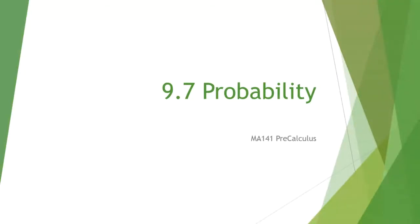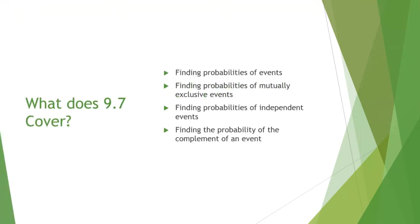Hello. Today I'm going over 9.7, which is probabilities. I'm going to go over several different definitions and then do many different examples for you. Section 9.7 covers finding probabilities of events, finding probabilities of mutually exclusive events, finding probabilities of independent events, and finding the probability of the complement of an event.